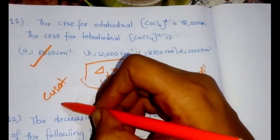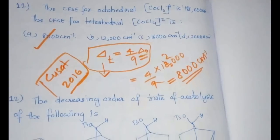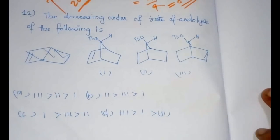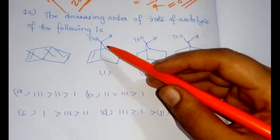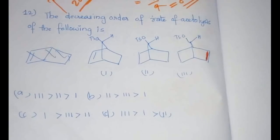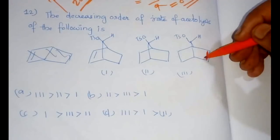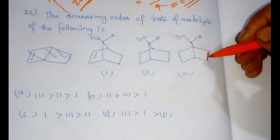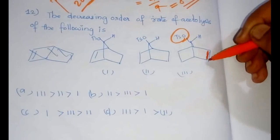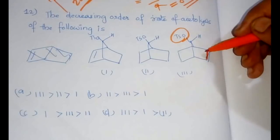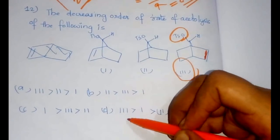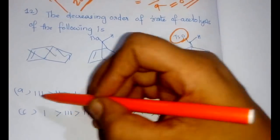A question from organic chemistry: the decreasing order of rate of acetolysis of the following is. What is basically happening here is there is a double bond, and there would be neighboring group assistance for the acetolysis. The double bond will be assisting the reaction. If it is anti to the OTs group, then the rate would be higher. The third one would have the fastest rate.